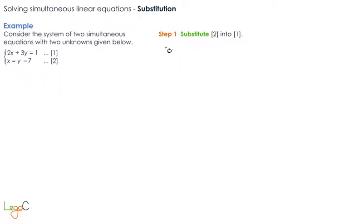We have 2, and we open brackets because instead of x, we are going to write the expression for x. And the expression for x is y minus 7. Now we continue to write the equation the way it is, so we have plus 3y equals 1.